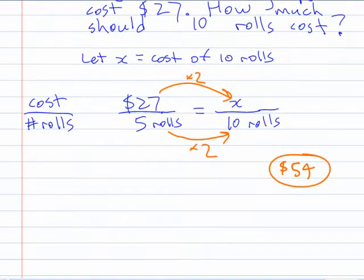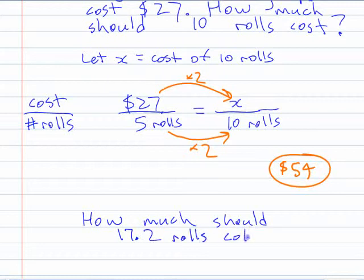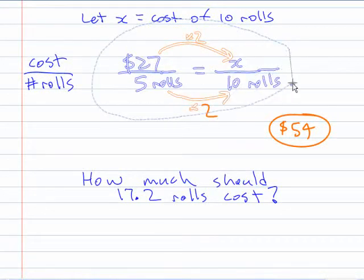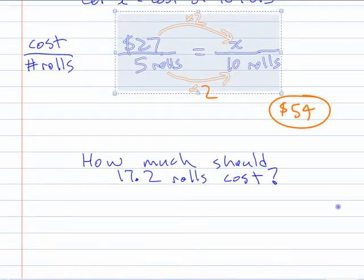The reason that I want you to do this is because then if we said, now, how much should – what was the number that we weren't going to use? Something weird like that, right? How much should 17.2 rolls cost? You can't buy 0.2 of a roll, but you could set up a proportion like this. How much should it cost? You can use the exact same proportion. You can use it exactly the same. I better write it out again because I'll make you feel bad because you have to write it out again.